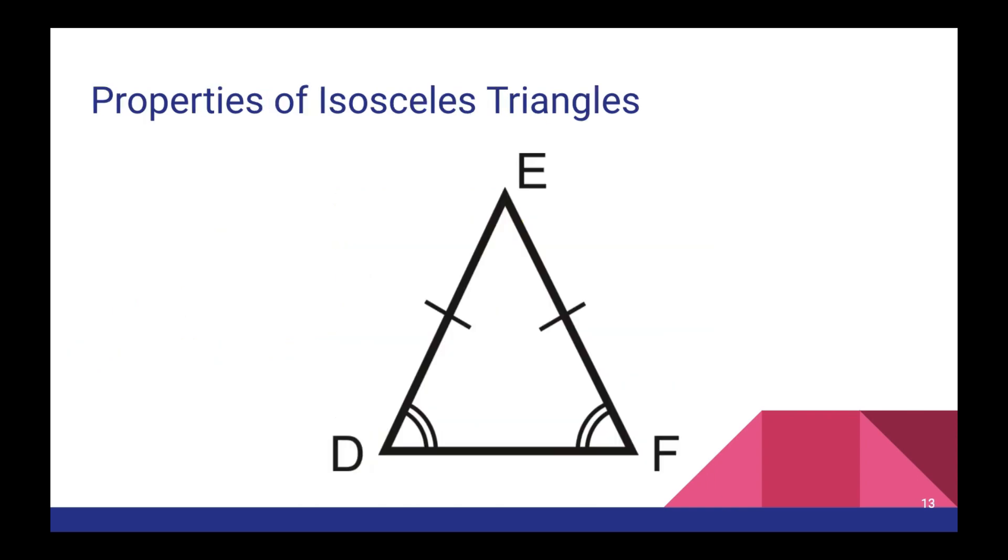So the next concept we're going to look at is isosceles triangles. Isosceles triangles are pretty straightforward. You got two sides in this triangle that are going to be equal to each other, ED and EF. And you also have two angles that are going to be equal to each other, in this case, EDF and EFD. And we're going to use those concepts to answer a lot of questions coming up.